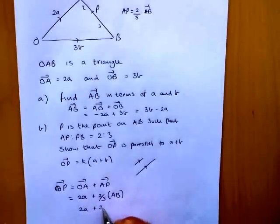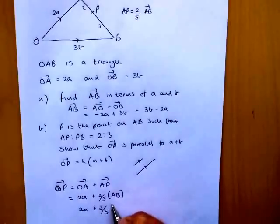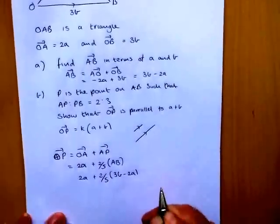So that gives me 2A plus 2 fifths. Now AB we just worked out was 3B minus 2A. So to finish this question, it's really algebraic.